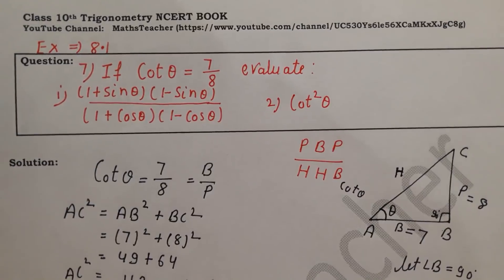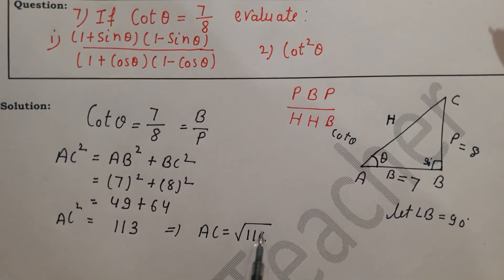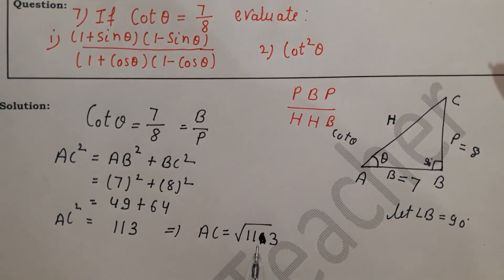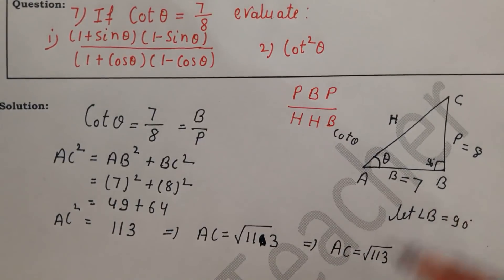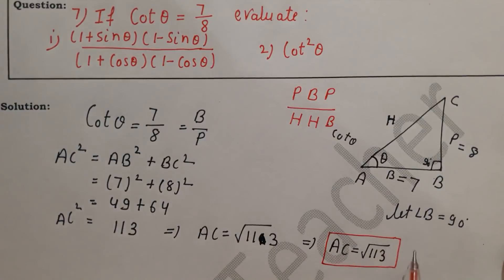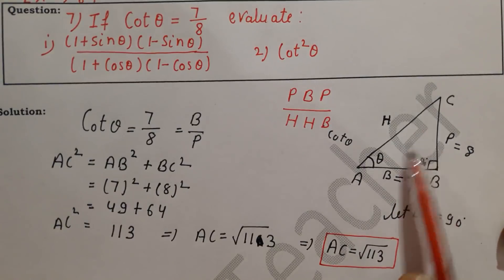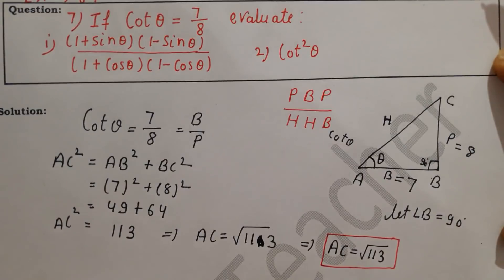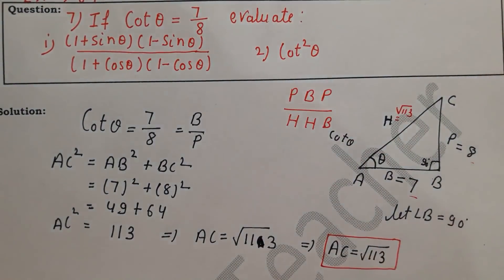This implies AC = √113. Now, 113 has no factors, so AC = √113 remains as is. We take only the positive value because AC is a length and lengths are always positive. So our triangle is complete with base = 7, perpendicular = 8, and hypotenuse = √113.